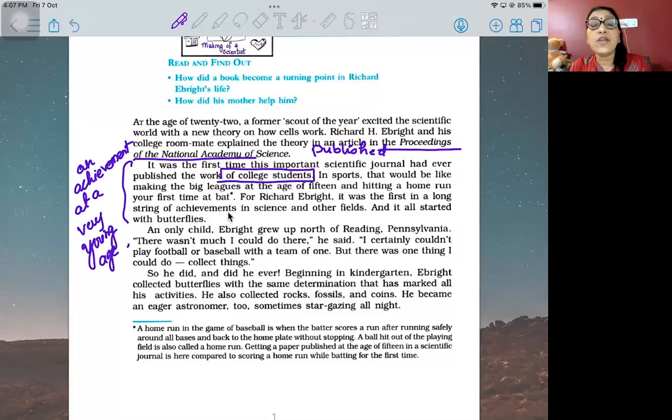Why do we consider Sachin Tendulkar as one of the finest batsmen? Because he started playing at a very early age. That's why he's nicknamed the young blaster. If you do something at a young age, it is really a great achievement. For Richard, it was the first in a long string of achievements in science and other fields, and it all started with butterflies.